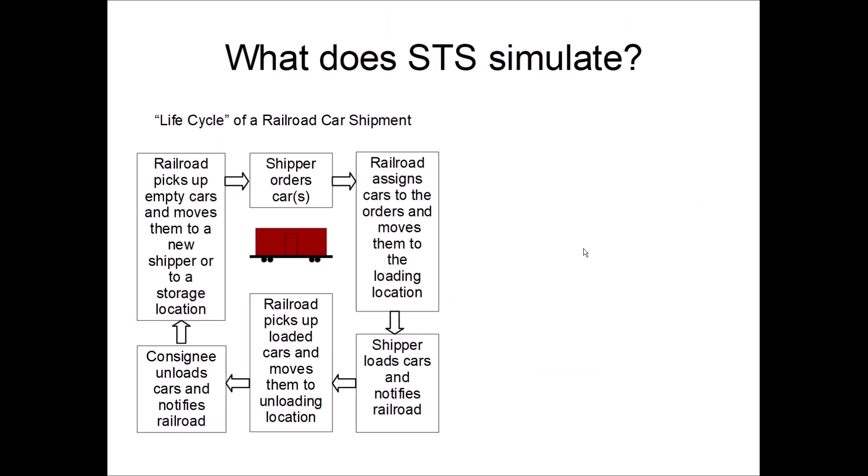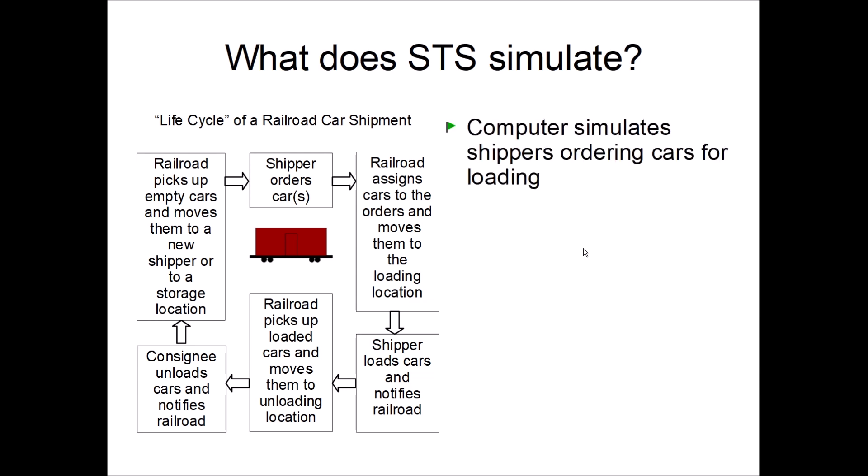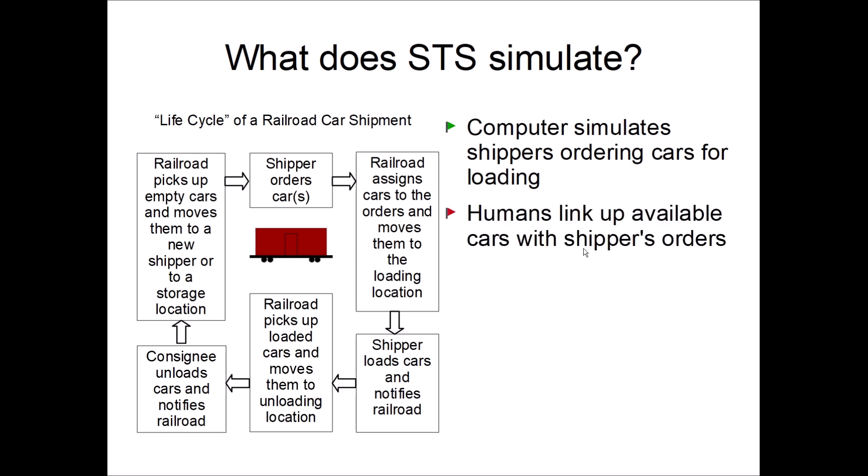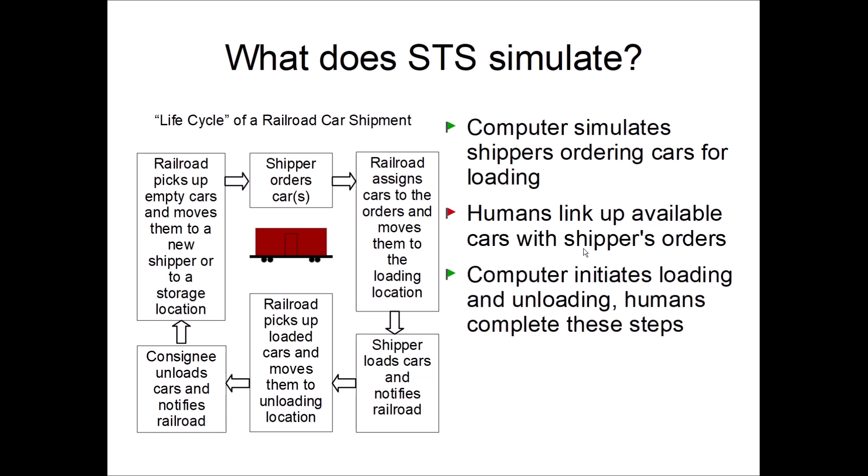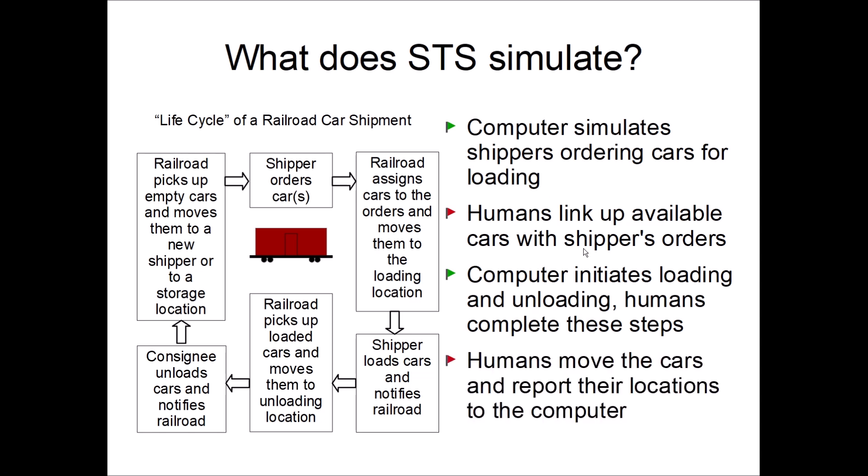Looking at the diagram on the left, we can see the life cycle of a shipment. Some of those boxes are performed by the railroad operators and some by customers. We call STS shipper-driven because it simulates the shippers ordering cars for loading, and it also simulates the initialization of the loading and unloading operations. Humans still have to assign cars to the shippers' car orders and confirm that the cars are loaded and/or unloaded.